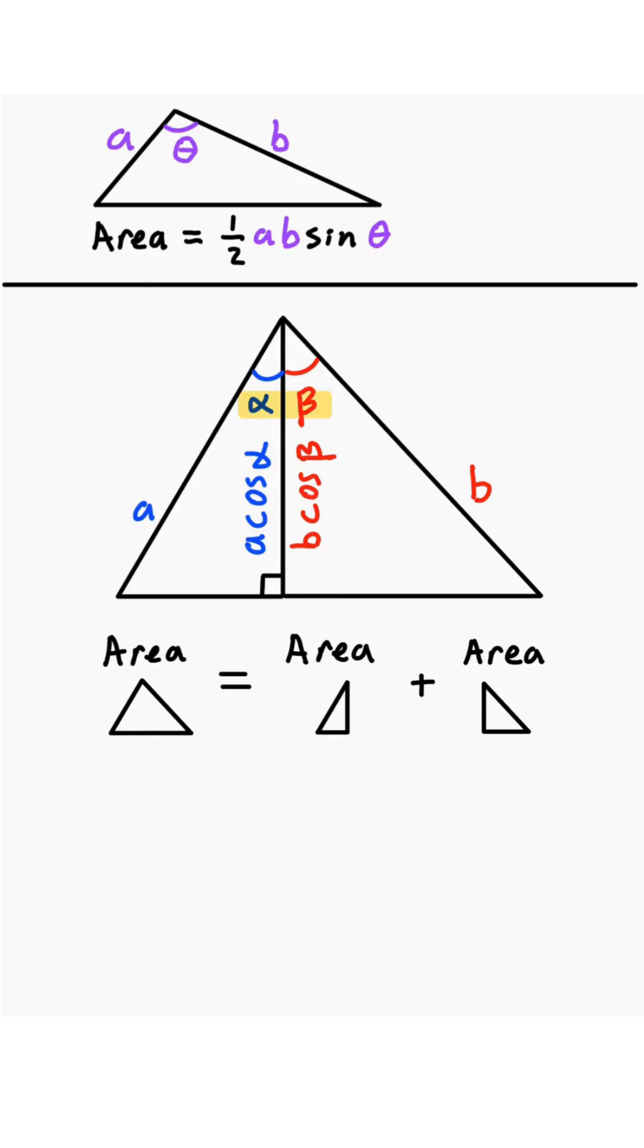So the large area, we're going to use alpha plus beta and a side length A and side length B using the formula we saw earlier. Then the area of that triangle is going to be one half times A times B times sine of alpha plus beta.